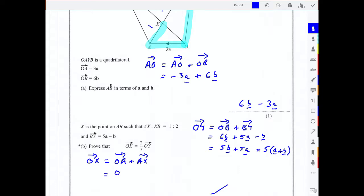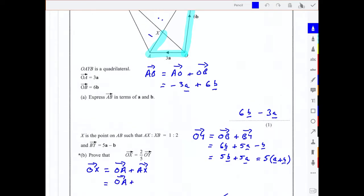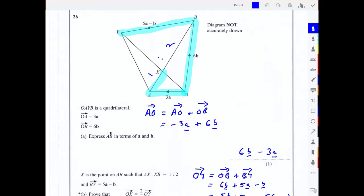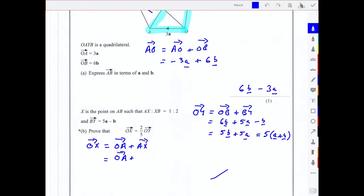And that's OA plus, and we said before that AX is one third of AB, so I can write that as one third of AB. Now I can put the vectors in. OA is just simply 3a, and then I want one third of the answer we got to the first part, which was AB, and that was 6b minus 3a.